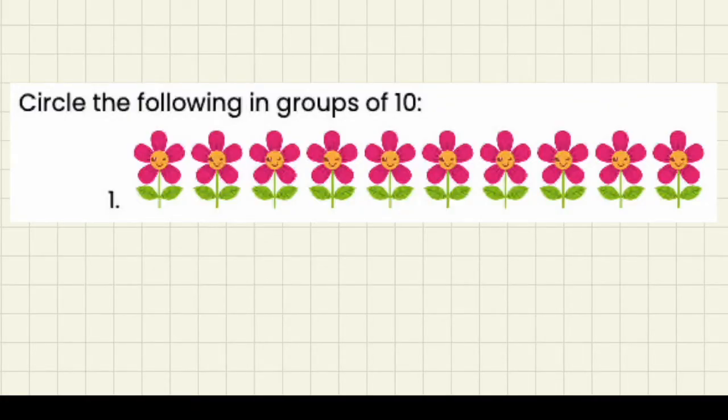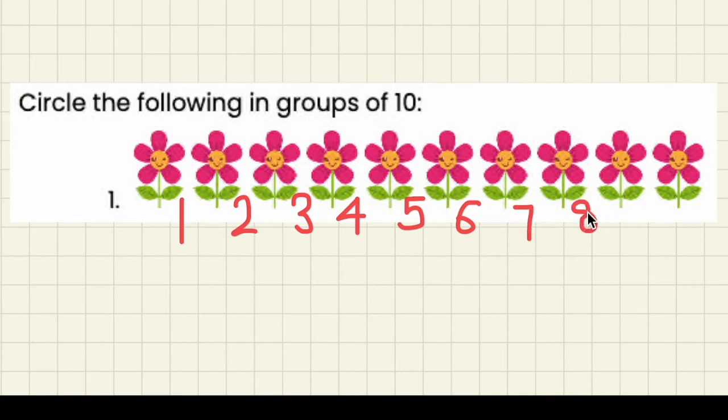Let's work on the first question together. Here we have to circle the flowers in groups of 10. So let's count how many flowers there are. 1, 2, 3, 4, 5, 6, 7, 8, 9, 10. There are 10 flowers, and so let's circle that into one group.